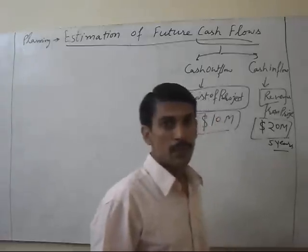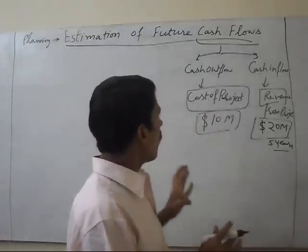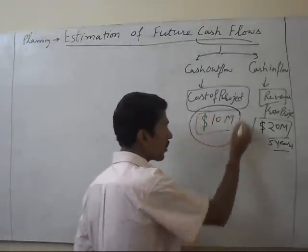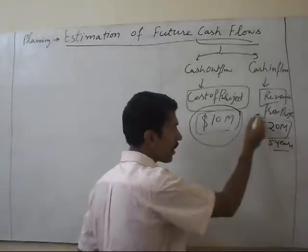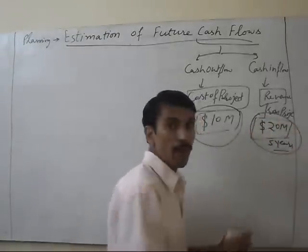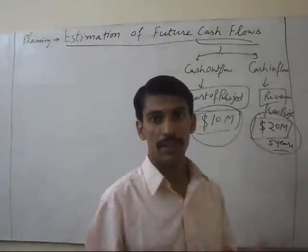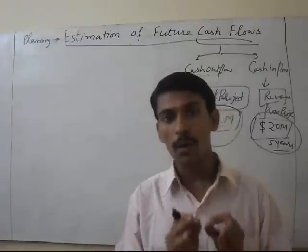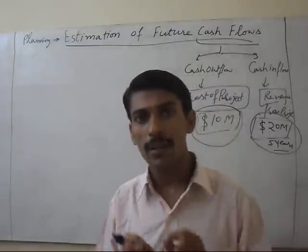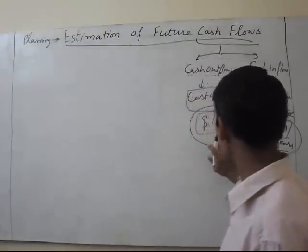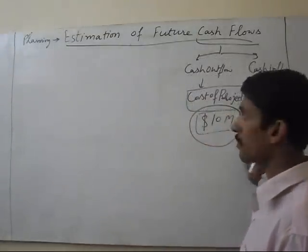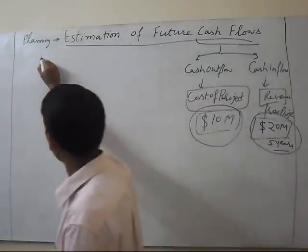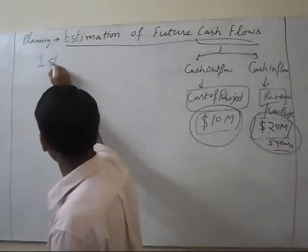It is the cost of the project, and the total profit from this project is 20,000,000 in 5 years. So we have to estimate this amount — how to estimate it is my objective to explain.